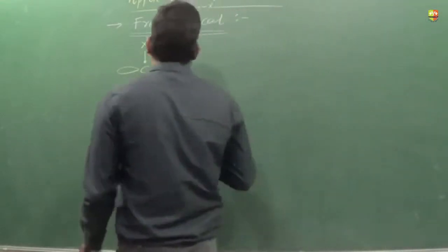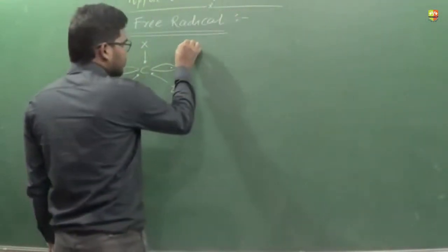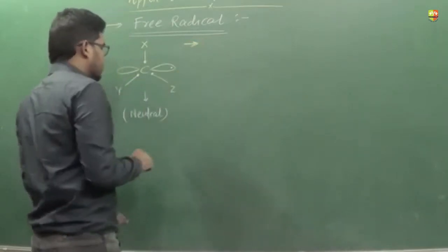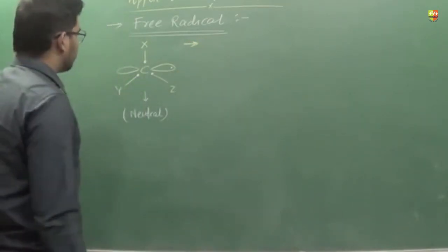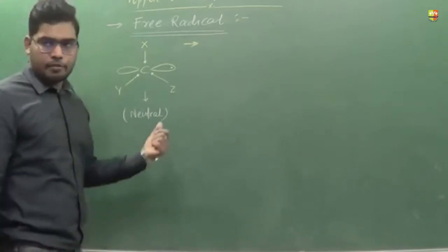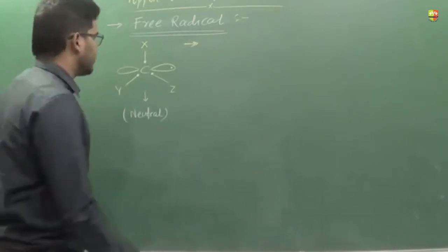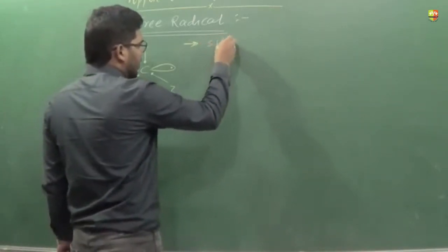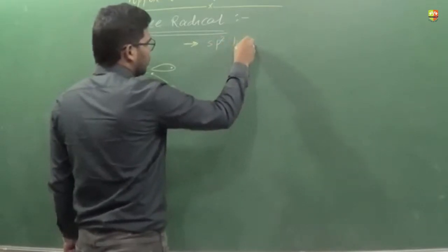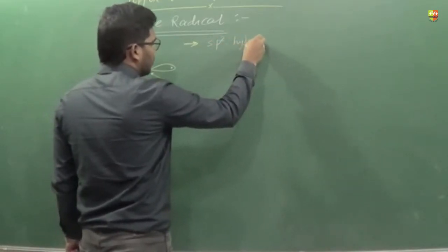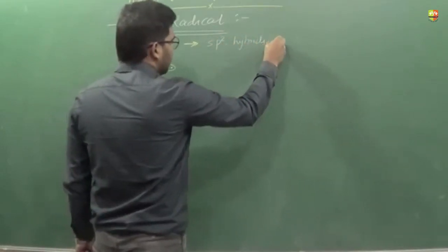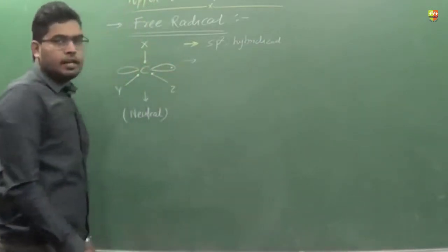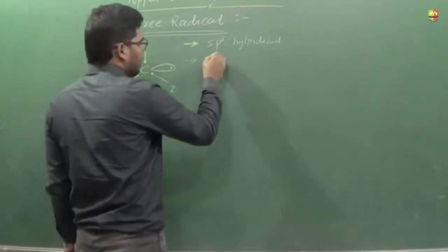Now let's see a few characteristics of this. This carbon atom, which is a free radical, is also sp2 hybridized. When it is sp2 hybridized, it is trigonal planar.